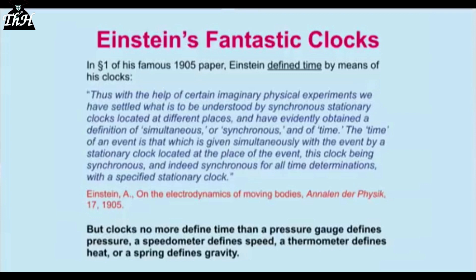Here's what Einstein says: 'Thus, with the help of certain imaginary physical experiments, we have settled what is to be understood by synchronous stationary clocks located at different places, and have evidently obtained a definition of simultaneous or synchronous and of time. The time of an event is that which is given simultaneously with the event by a stationary clock located at the place of the event.' He wants systems of clock-synchronized stationary observers — that's what he's saying.